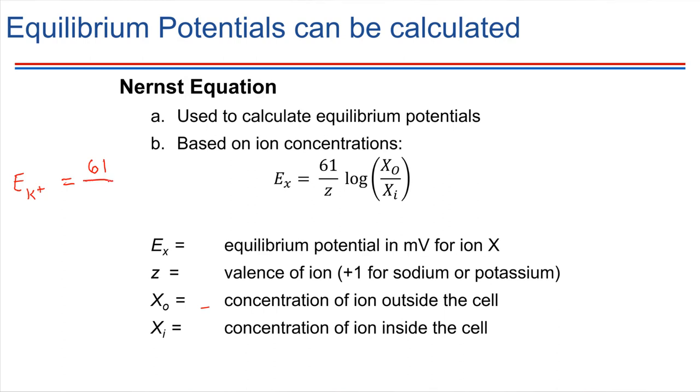So 61 divided by the valence of this ion that I'm interested in. For potassium, we already know that its valence charge tends to be plus one, so Z is just going to be plus 1. And then we're going to multiply that by log of a ratio. We're going to take the ratio of two concentration values - the concentration of potassium ions outside of the cell as the numerator, and divide by the concentration inside of the cell.